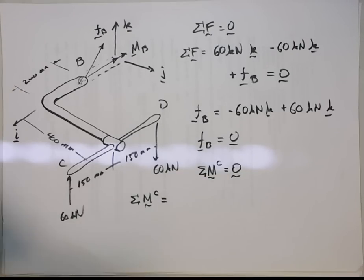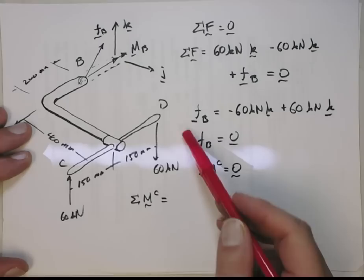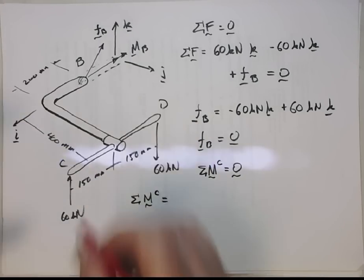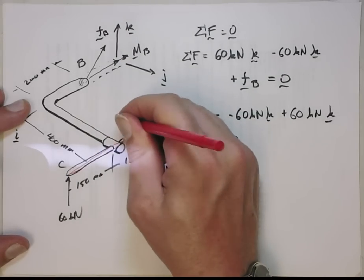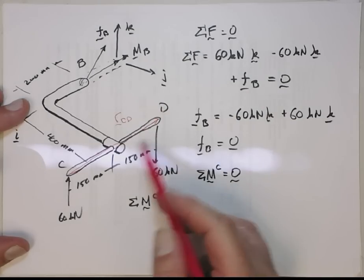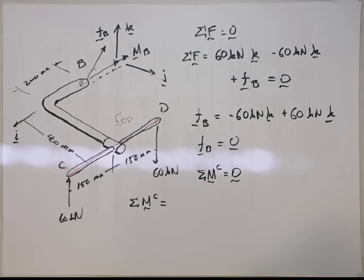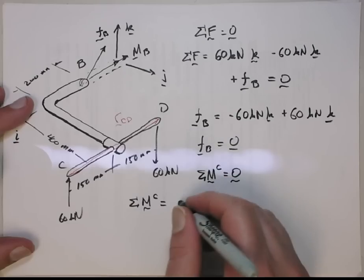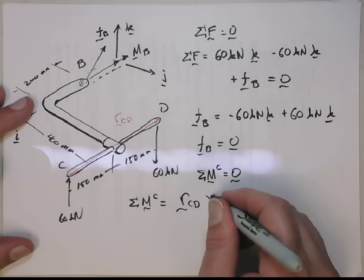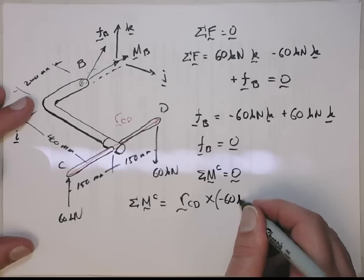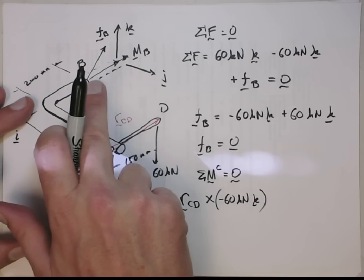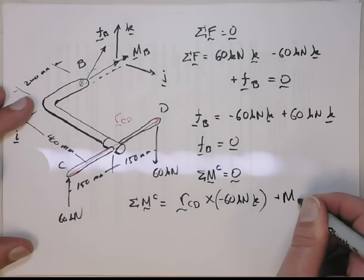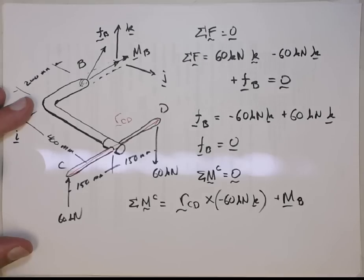So to get the moment of this force at point D about point C, we need this moment arm vector. I'm going to call it RCD. Okay? That's the moment arm from point C to D. Okay? So the moment of that force is going to be RCD cross that force. So that force is minus 60 kilonewtons in the k direction. Okay? So that's the moment of this force about point C. And then we also have that unknown internal reaction moment at point B. And those two should sum together to give us zero.